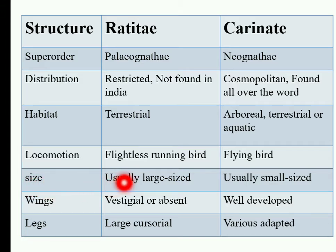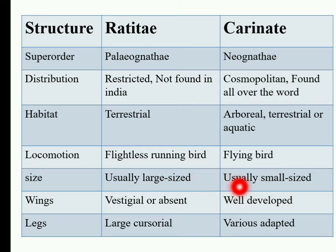The first characteristic is size. Ratites birds are usually large size birds, and Carinates are usually small size. Because if they are small size, their body weight decreases and they can easily fly. Ratites birds are large size, so their body weight increases and they cannot fly.